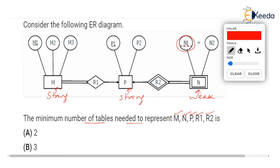Which type of relation is R1? It is strong to strong, and there is an arrow towards entity set P, so this is the one side. There is no arrow on the other line, so that is the many side. A double line is shown between M and the relation, indicating total participation, while the single line between R1 and P indicates partial participation.